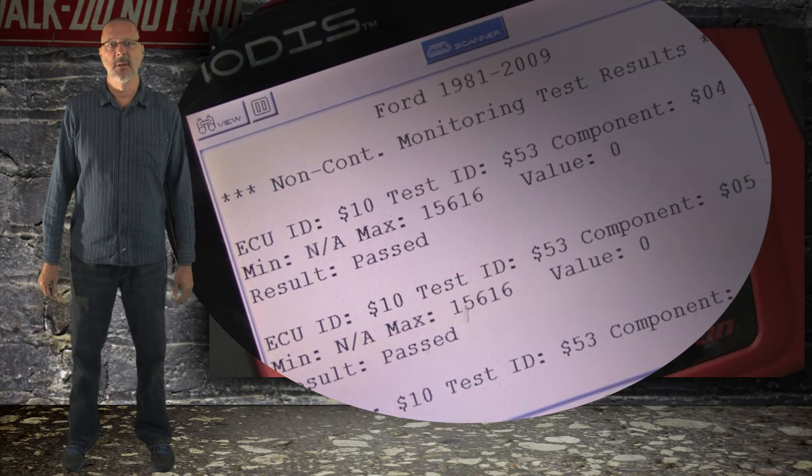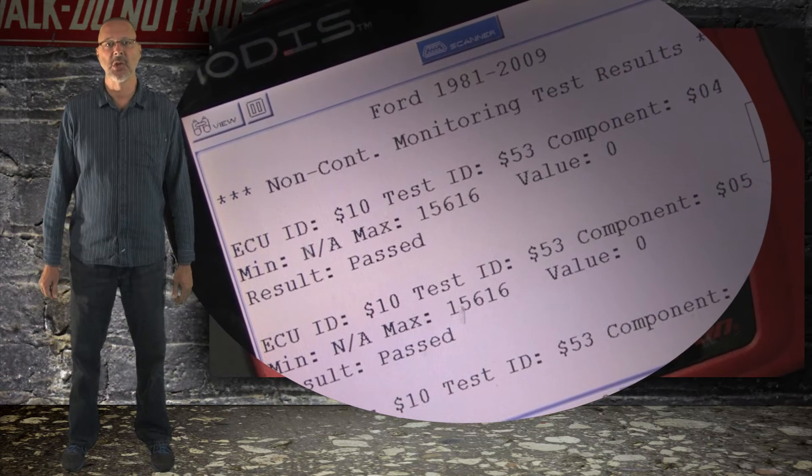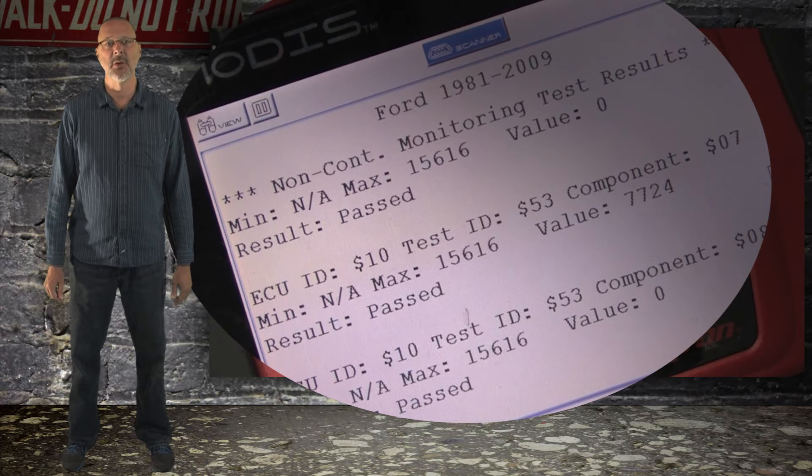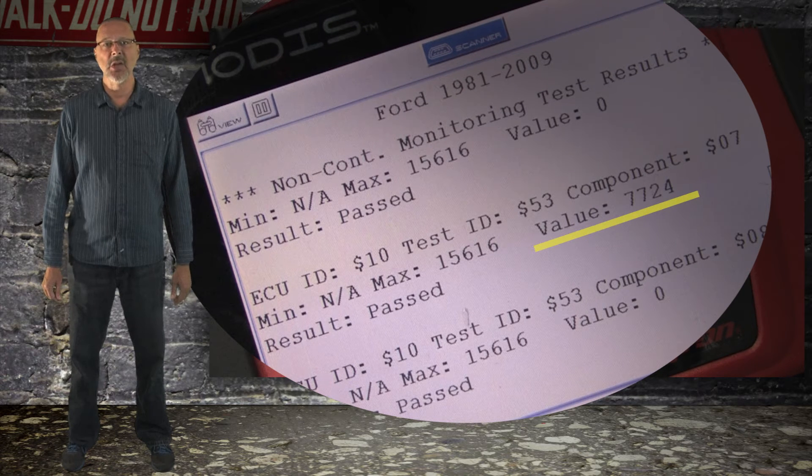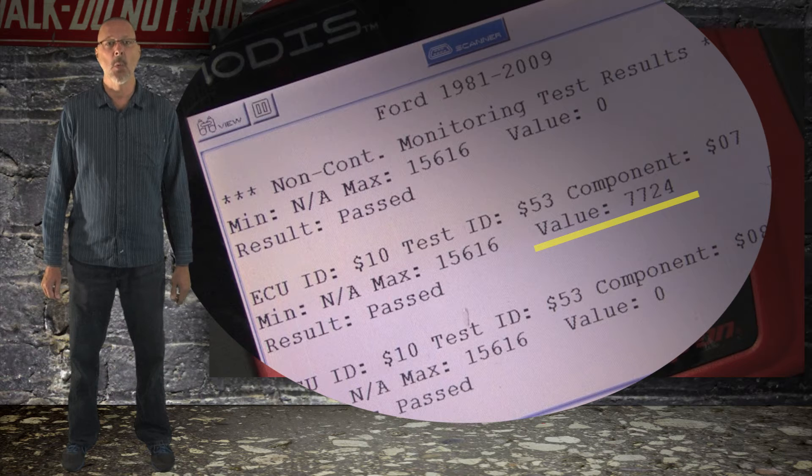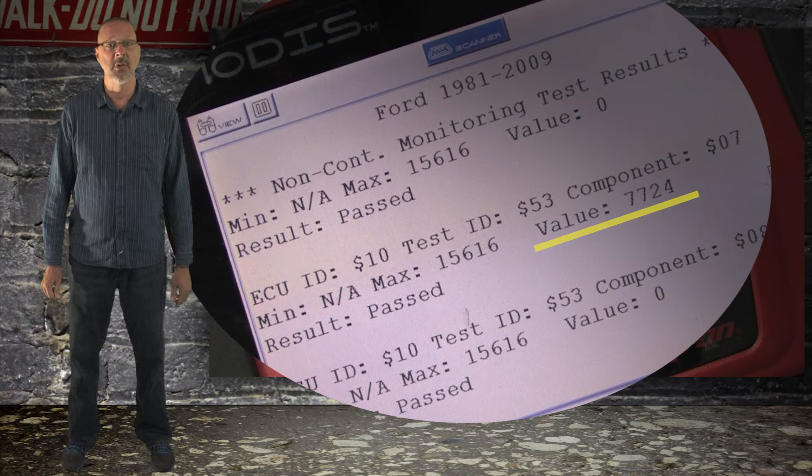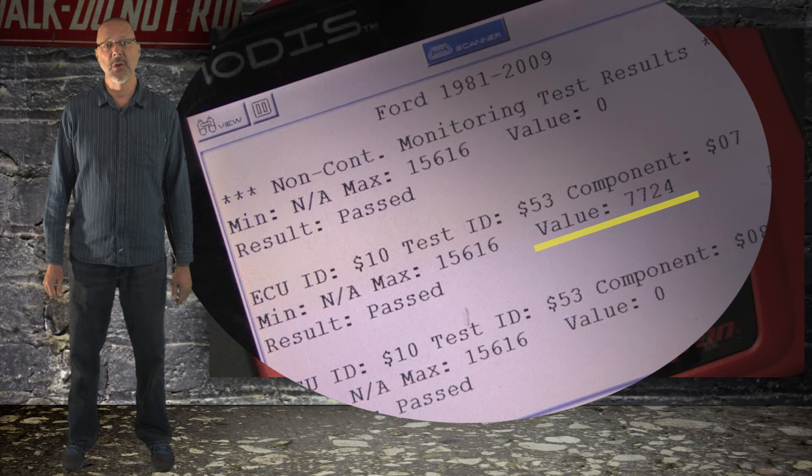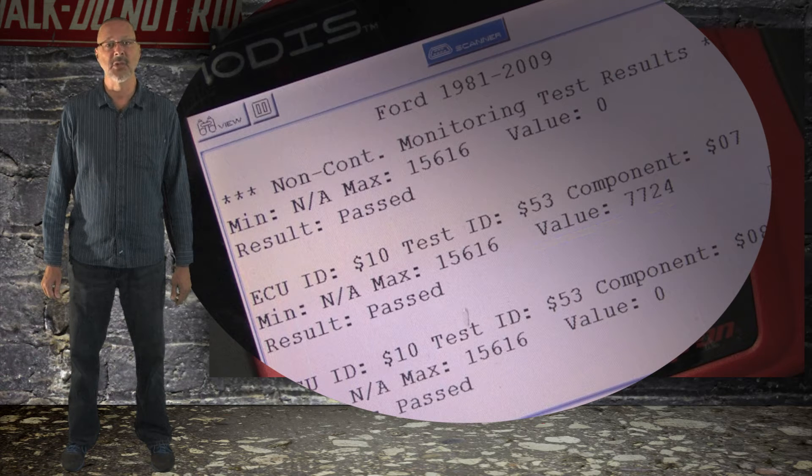Let's scroll down a little further. As you can see, all the cylinders show zero misfires until we get to cylinder number seven. Under value it says 7724, which is 1.1% misfire on this cylinder. Not enough to turn on the check engine light, but we know there are misfires occurring at Cylinder 7 for some reason.